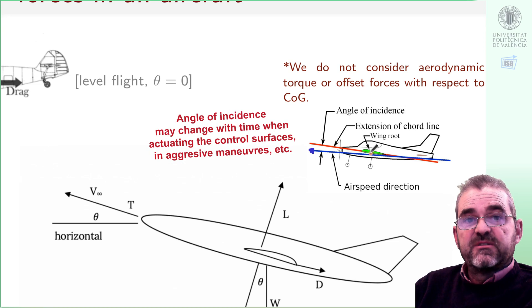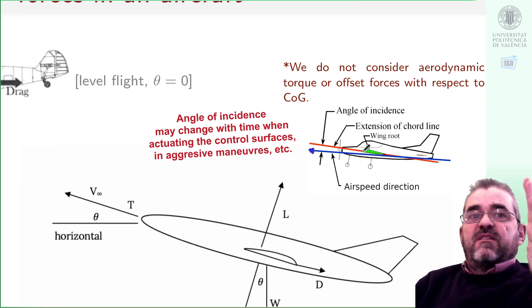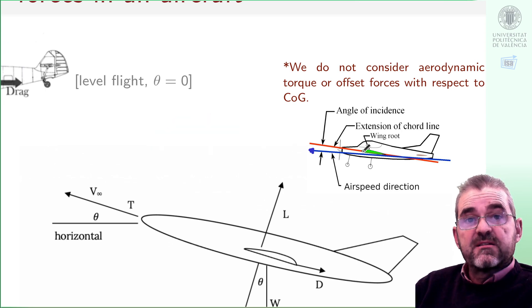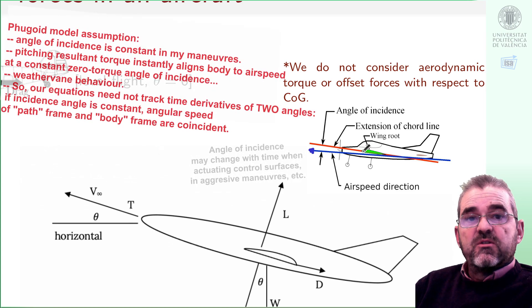For instance, in an aggressive maneuver in which the pilot may place himself like this in a fighter jet in order to quickly brake. Indeed, more complex models in flight dynamics do consider that situation. However, we will simplify and assume that the angle between the red and blue lines is constant during my not-so-aggressive maneuver.